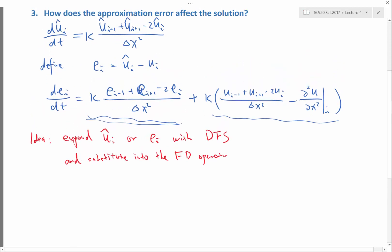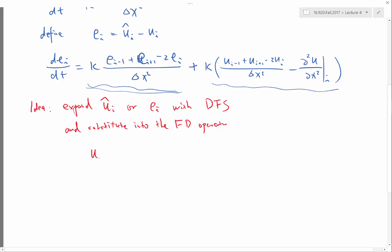Let's pick U_i hat as an example. If I expand it using a discrete Fourier series, I have a summation over K, but instead of K going from minus infinity to infinity, now K is going to be summed over a finite range — minus N over 2 to N over 2 minus 1.